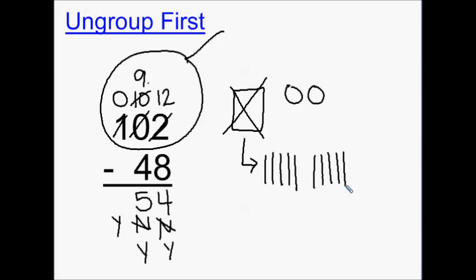I still do not have enough ones, so now I need to ungroup one ten. And now I will have ten more ones. In my picture, I now see that I have zero hundreds, nine tens, and twelve ones.